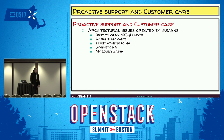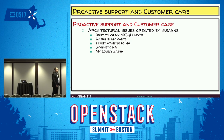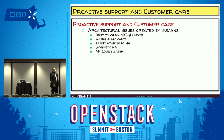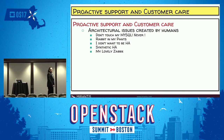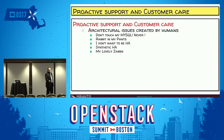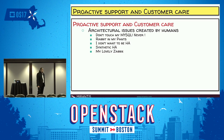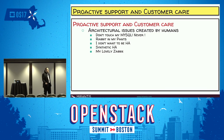Today we're going to talk about some architectural issues created by humans. We'll also discuss some common workflows and which operation technologies we have. We will have a common view of how to avoid a cloud breakdown and other stuff like that. Let's start from the proactive support and customer care.